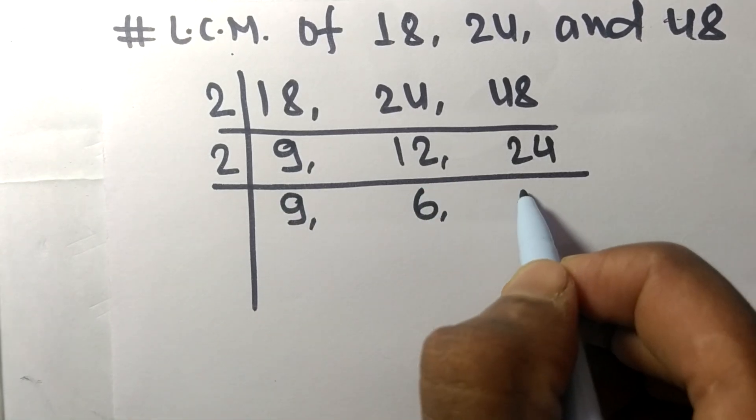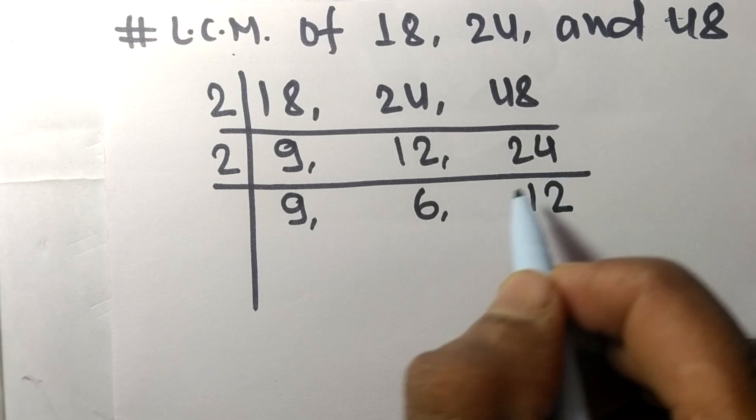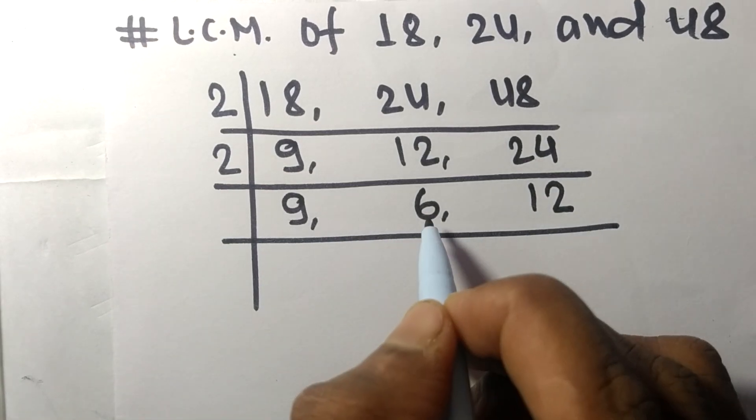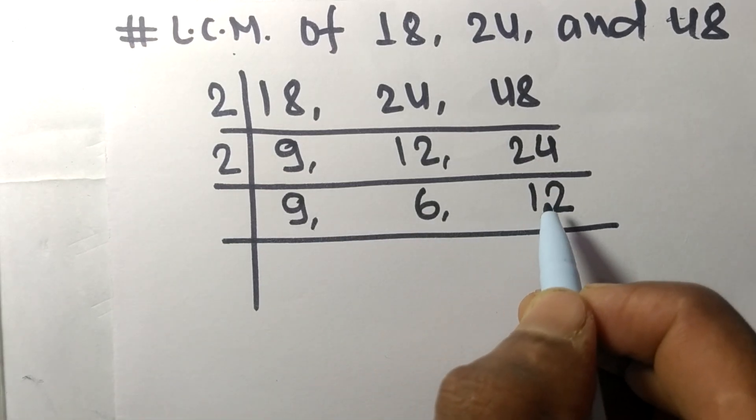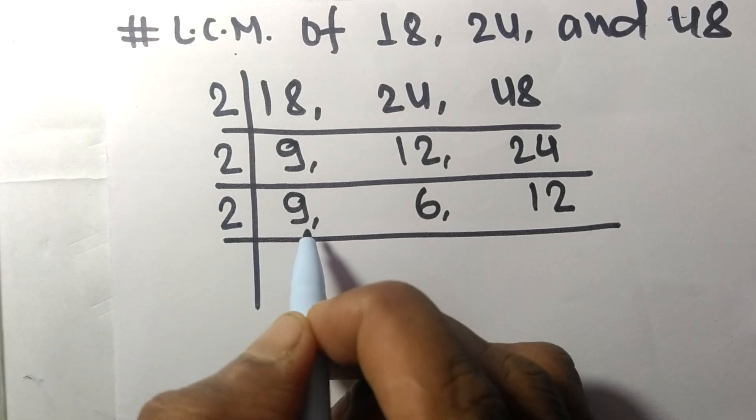Now 6 and 12 are again divisible by 2. 9 is not divisible so it stays the same. 2 times 3 equals 6, 2 times 6 equals 12.